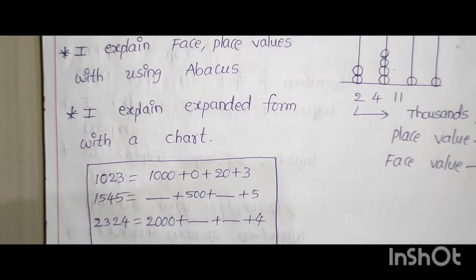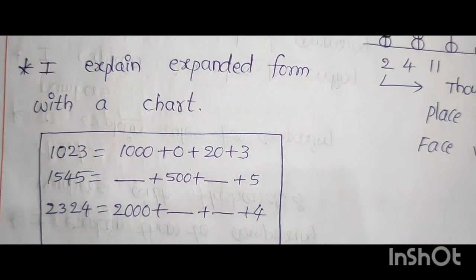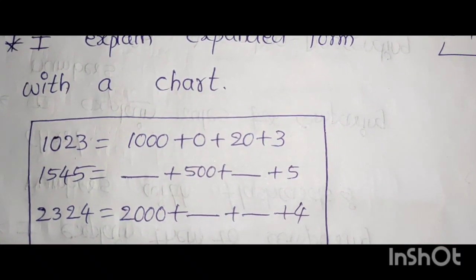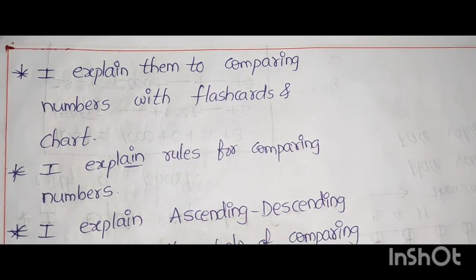And I explain expanded form with a chart. 1023 is equal to 1000 plus 0 plus 20 plus 3. 1545 is equal to dash plus 500 plus dash plus 5. They fill the dashes.